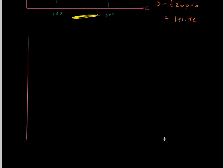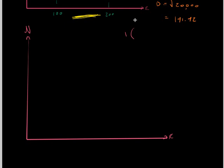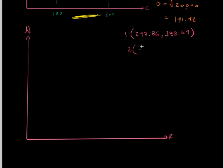I'll draw my coordinate axes again. Point 1 has coordinates: Northing 247.86 and Easting 388.64. Point 2 has coordinates: Northing 465.12 and Easting 401.86.